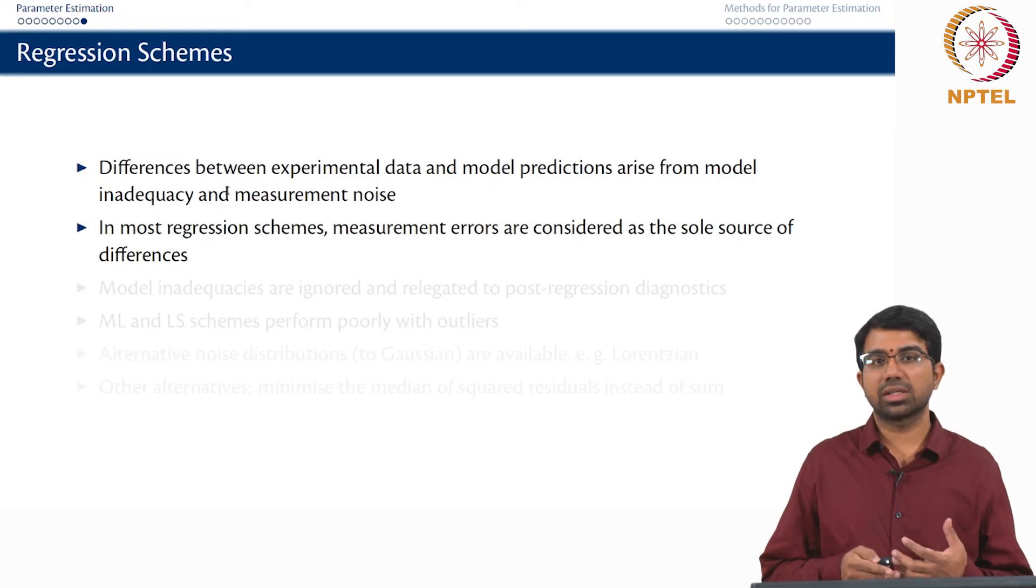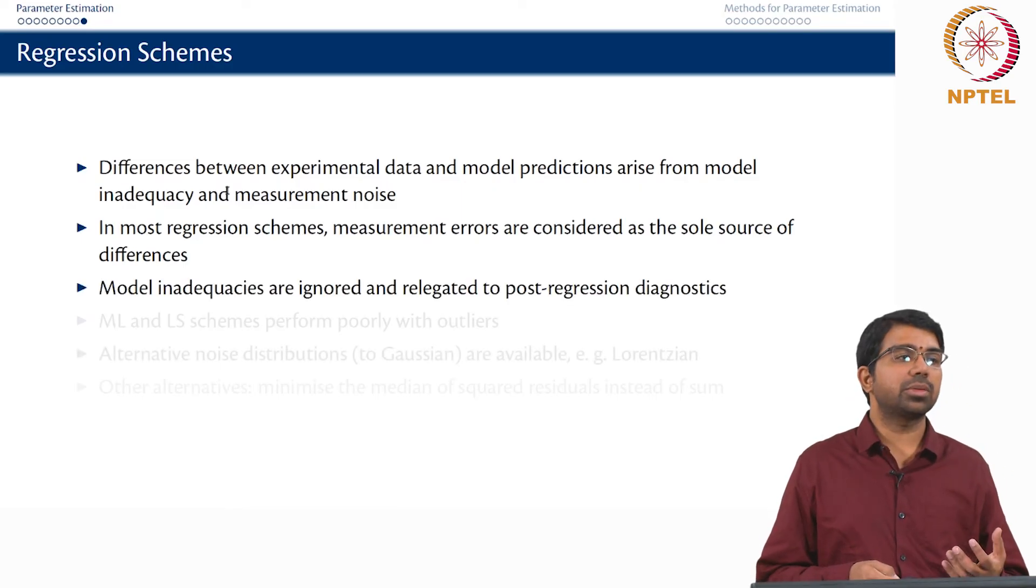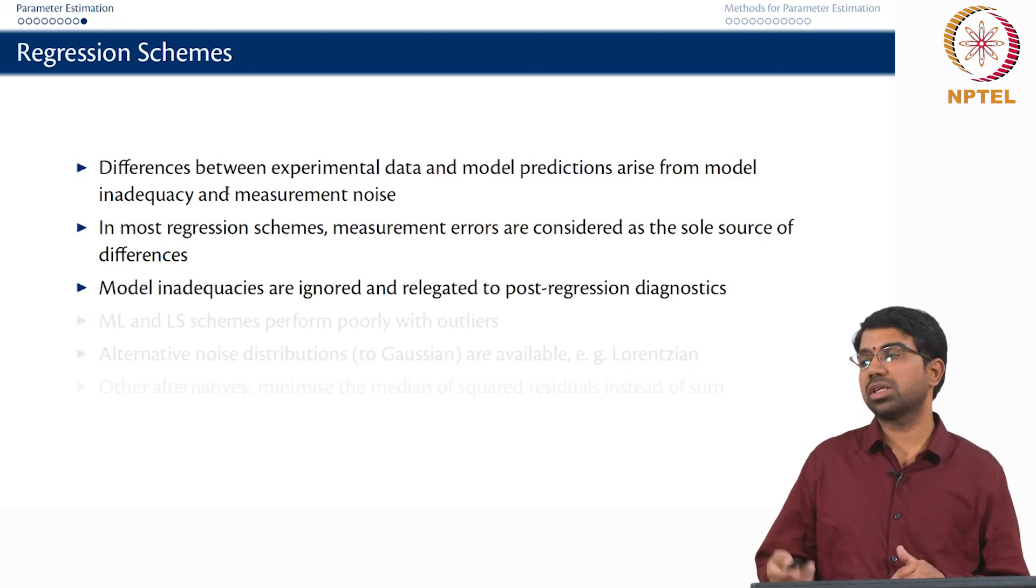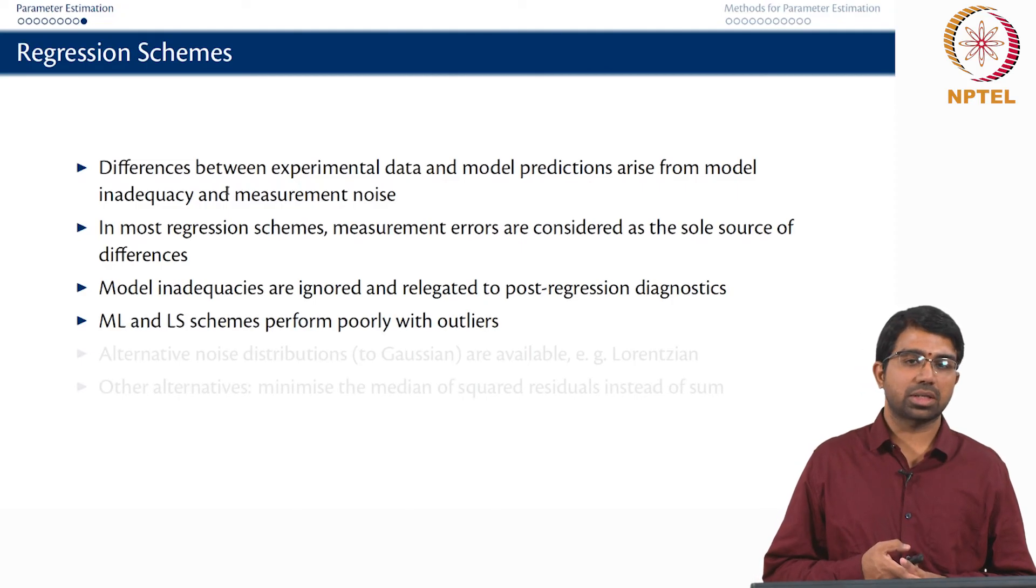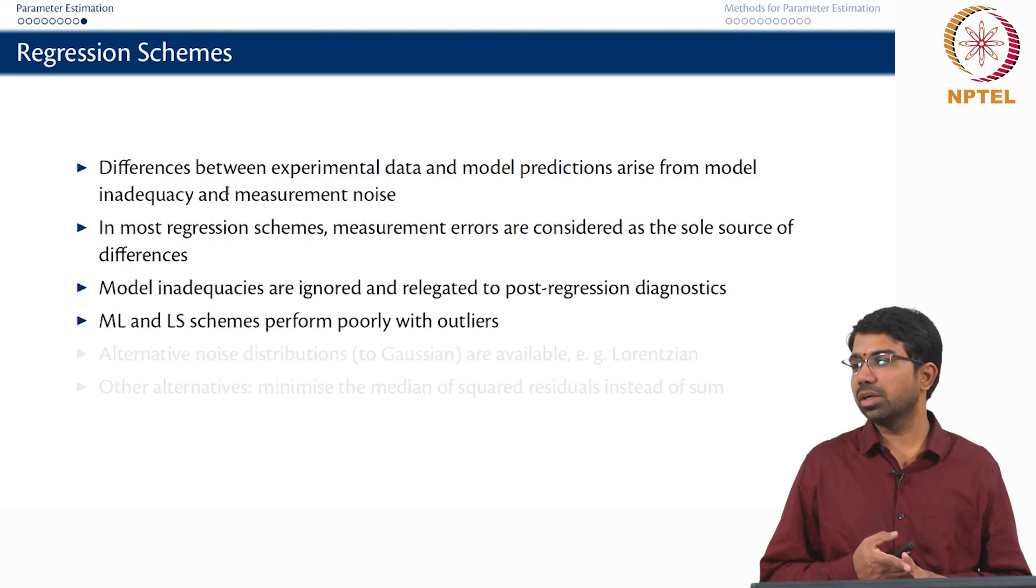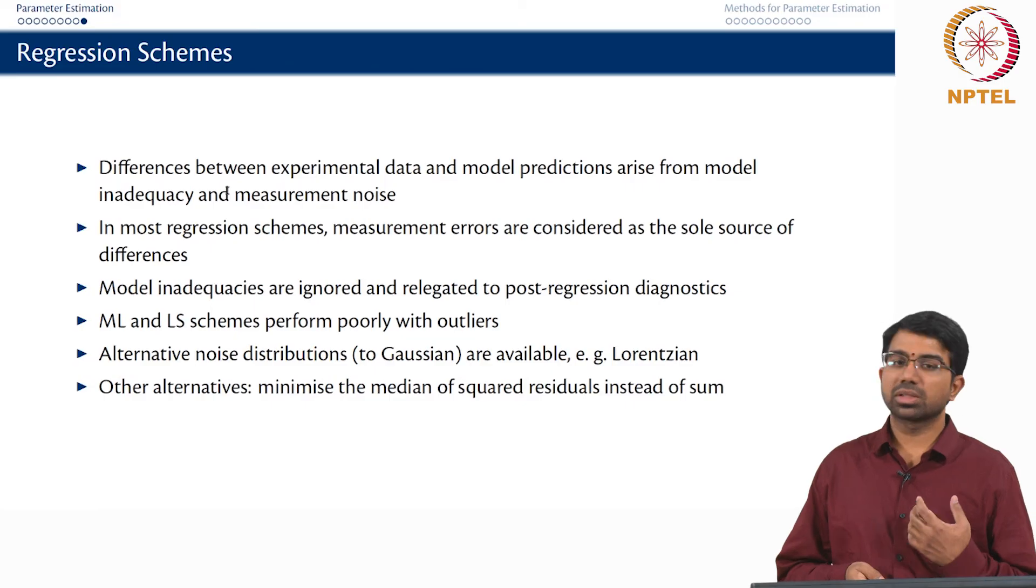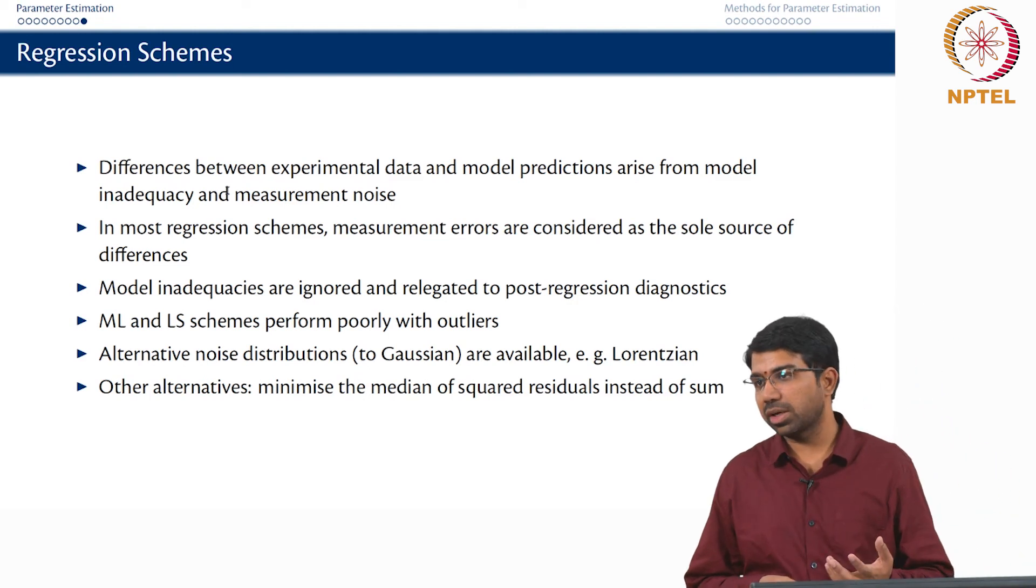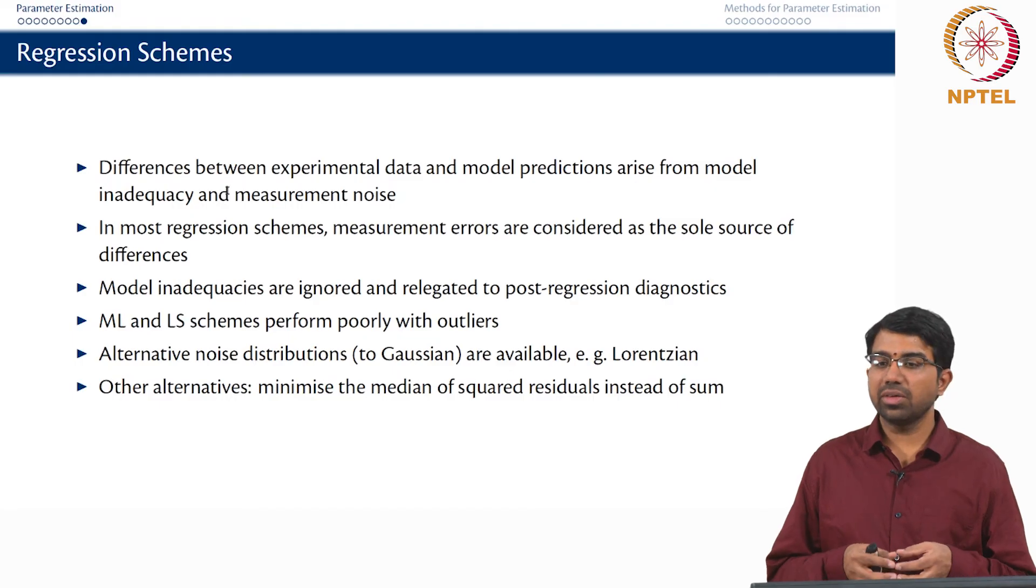So in most regression schemes, the measurement errors are considered as the sole source of difference between your data and your model predictions. And model inadequacies are kind of ignored and then relegated to post regression diagnostics. Once you perform the parameter estimation regression, you then do some diagnostics. One issue with both ML and least square schemes is that they both perform poorly with respect to outliers. One outlier can hurt it. So there are other alternatives possible. You may want to minimize the median of the residuals instead of the sum of the residuals. But anyway, you have weighted least square formulations and there are other noise distributions also that you can use. So all these things become very subjective. And they very well depend upon the modeling task in hand and how you pick them and so on.